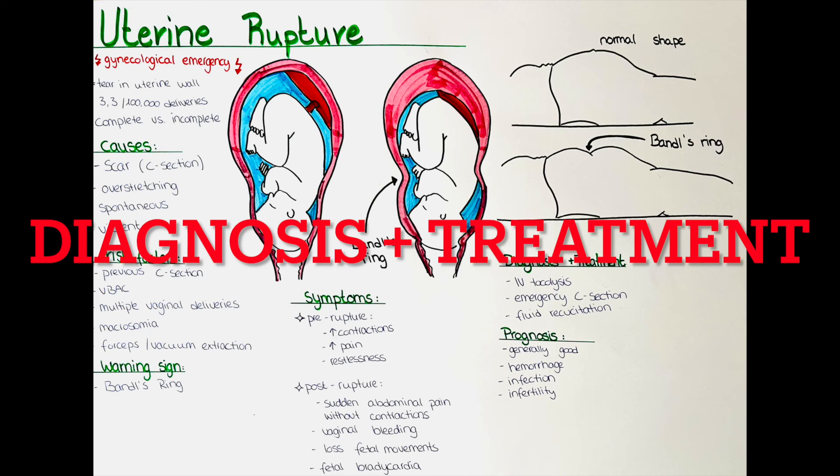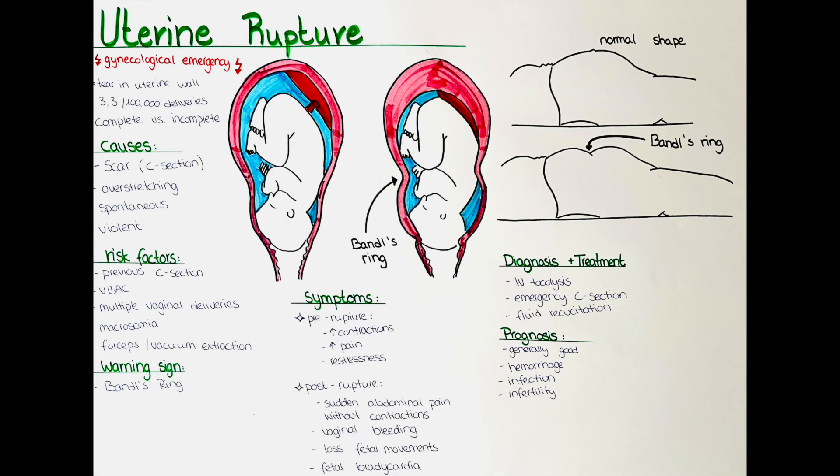How do we diagnose and treat uterine rupture? The diagnosis is usually made based on clinical signs and symptoms.